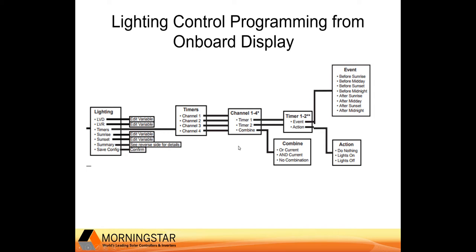Now let's take a deeper dive into the timers. There are four channels and each channel has two timers — basically one timer to tell it when to turn on and the second to tell it when to turn off. Each timer has an event and an action. The event is the trigger, e.g. sunset, and the action is what you want to happen, e.g. turn the lights on.